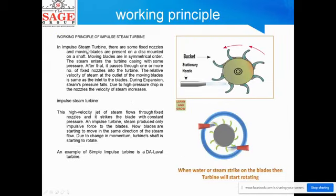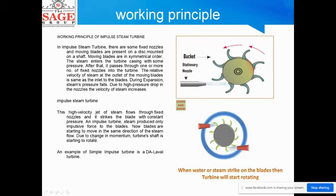Impulse turbine: In an impulse turbine, there are fixed nozzles and moving blades present on a disc mounted on the shaft. The moving blades are arranged in a symmetrical order. Steam enters the turbine casing with some pressure and passes through one or more fixed nozzles into the turbine. The velocity of steam at the outlet of the moving blades is the same as at the inlet. This is the impulse turbine — an example is the De Laval turbine. A high velocity steam jet flows through the fixed nozzle and strikes the blades at constant pressure. The impulse turbine steam produces only impulse force on the blades.